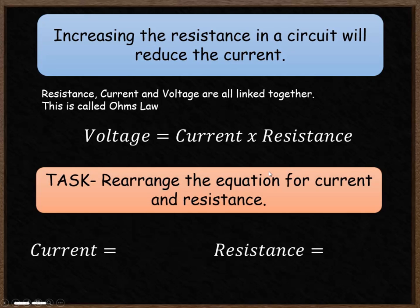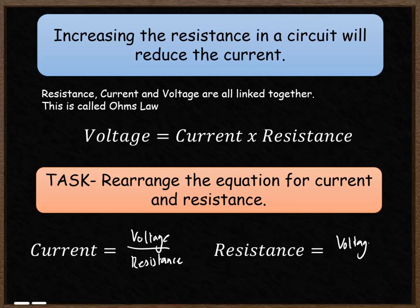Pause the video and rearrange this equation so that it equals current and so that it equals resistance. We're then going to have a go at some practice questions calculating current, resistance, and voltage. If we rearrange the equation to equal current, the answer will be voltage divided by resistance. And if I want resistance on its own, I divide by current on both sides, so resistance equals voltage divided by current. You're going to need those three equations — or the top one — and rearrange it to answer the following questions.